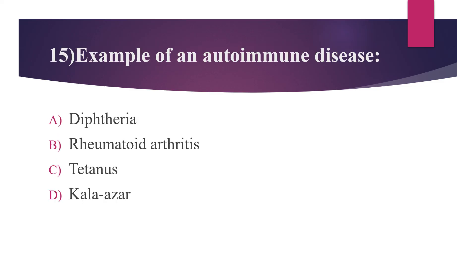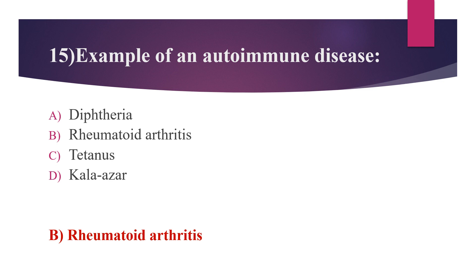Fifteenth question: an example of an autoimmune disease. Option A: diphtheria. Option B: rheumatoid arthritis. Option C: tetanus. Option D: cholera. The answer is option B, rheumatoid arthritis. Rheumatoid arthritis is an autoimmune and inflammatory disease. Autoimmune disease means our immune system attacks healthy cells in our body by mistake, which causes inflammation. Rheumatoid arthritis mainly attacks the joints, usually many joints at once.